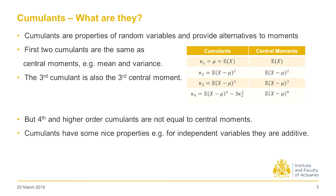We used cumulants to do our simulation study to analyze bias and variance for both overlapping and non-overlapping data. Cumulants are very similar to moments: the first three cumulants are the same as the first three central moments, and the fourth cumulant differs only slightly. Cumulants have nice properties because they are additive and independence is achieved easily for random variables, which is why we used them for the simulation study.